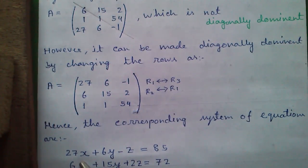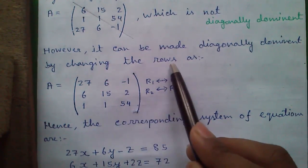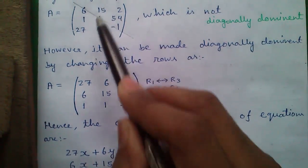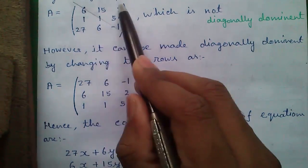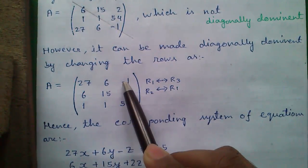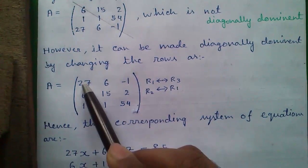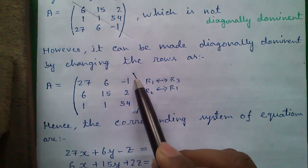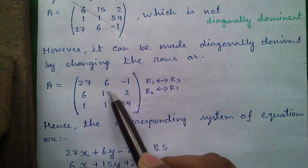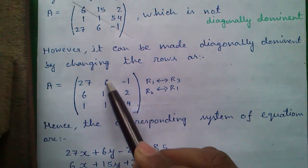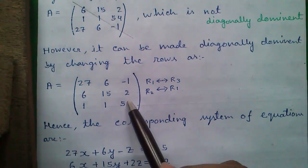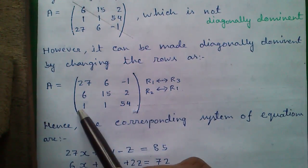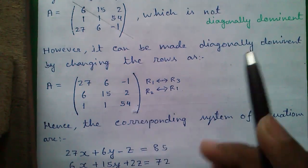However it can be made diagonally dominant by changing the rows as writing row 3 in row 1 and row 1 in row 2. You will get our new matrix which is diagonally dominant. Here 27 is larger than 6 and minus 1, 15 is larger than 6 and 2, and 54 is larger than 2 and minus 1 and 1, so it's a diagonally dominant matrix.